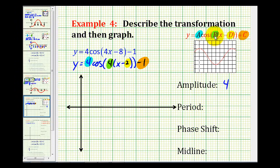The period is equal to 2 pi divided by B, and since B is equal to 4, we have 2 pi divided by 4, so the period is pi over 2 radians.